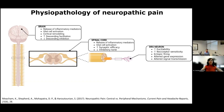Neuropathic pain is associated with disbalances in several structures, such as in the brain, where there is a release of inflammatory mediators, changes in glia and in cortical remodeling, and an increase in the descending facilitation pathways and a decrease in the descending inhibitory pathways. Also in the spinal cord, where there is a release of inflammatory mediators, glial cell activation, an increase in synaptic efficiency, and a decrease in inhibitory tone.